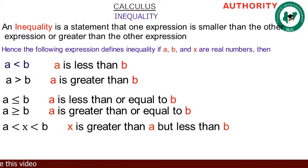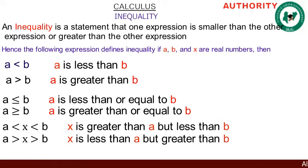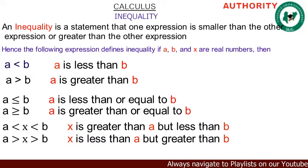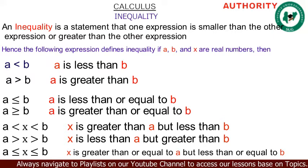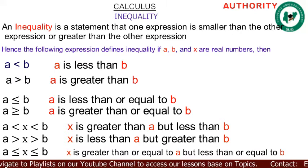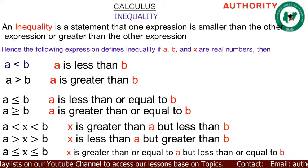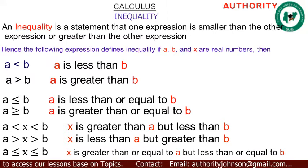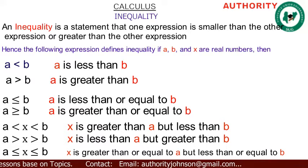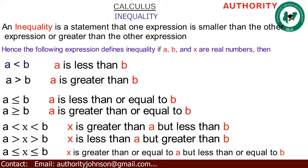Likewise, when you have a > x > b, the correct reading is: x is less than a but greater than b. And when you have a ≤ x ≤ b, you read it as: x is greater than or equal to a but less than or equal to b.